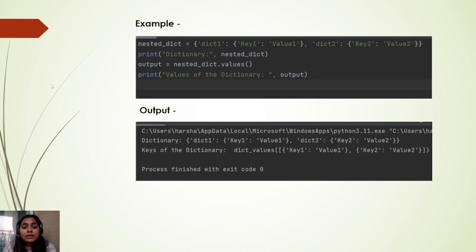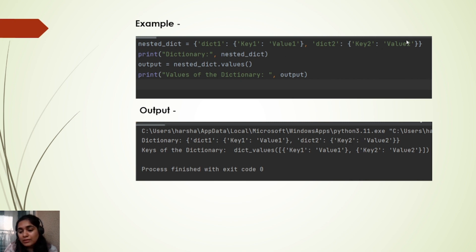Similarly, if we try the values method on a nested dictionary, we have a dictionary inside a dictionary. We will be getting the output as a list of values — one value being the inner key-value pair of key1 and value1, and another being key2 and value2.